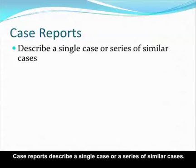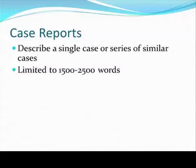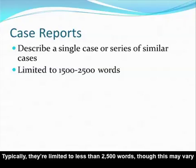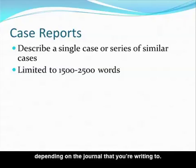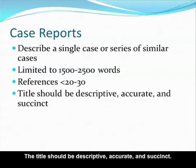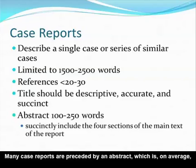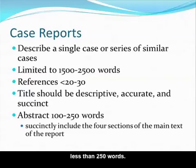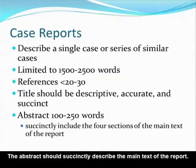Case reports describe a single case or a series of similar cases. Typically they are limited to less than 2,500 words, though this may vary depending on the journal. Also, references are typically less than 30, and many times less than 20. The title should be descriptive, accurate, and succinct. Many case reports are preceded by an abstract which is, on average, less than 250 words, and the abstract should succinctly describe the main text of the report.